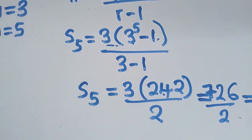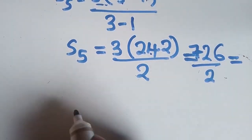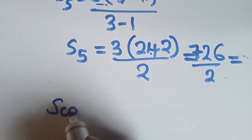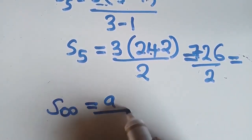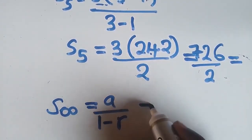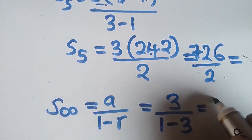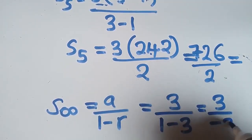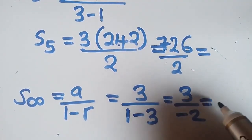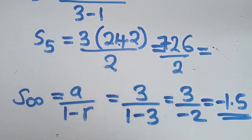We now go to sum to infinity. The formula is S∞ = A / (1 - R). What is your first term? 3. So you have 3 over (1 - 3), which equals 3 over negative 2, giving negative 1.5. That is the sum to infinity.